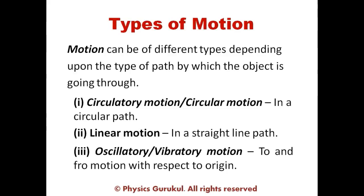There are different kinds of motion: circular motion, linear motion, and oscillatory motion. When an object moves in a circular path, the motion is circular. When an object moves in a straight line — motion in 1D, along x, y, or z axis — the motion is said to be linear. And oscillatory motion is to-and-fro motion, like the motion of a pendulum.